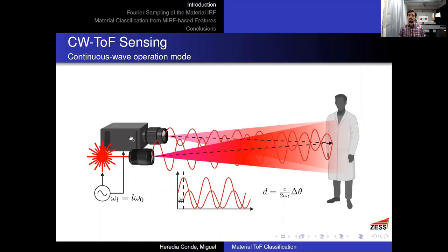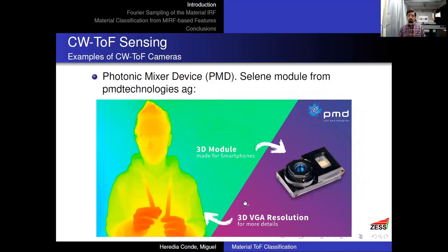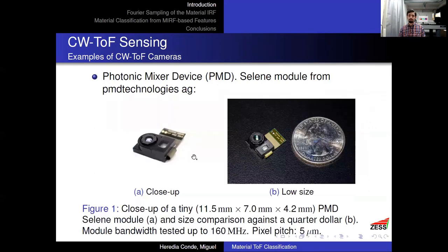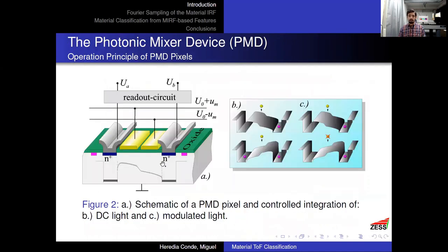The time-of-flight camera retrieves the phase shift that the modulated light has undergone by going to and returning from the scene, and from this shift we compute depth. One of the most flexible and developed technologies for this is the photonic mixer device (PMD) technology. Here we have the Selene module from PMD, which is the one we use in our work. It is a very tiny module where the lens and the light emitter are very close to each other; the pixel pitch is only five micrometers and they offer a bandwidth up to 160 MHz.